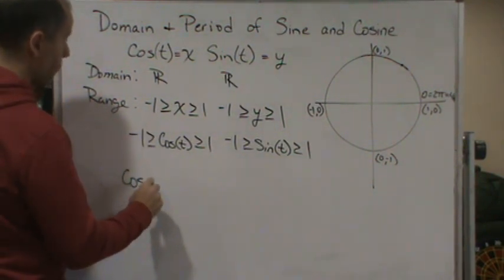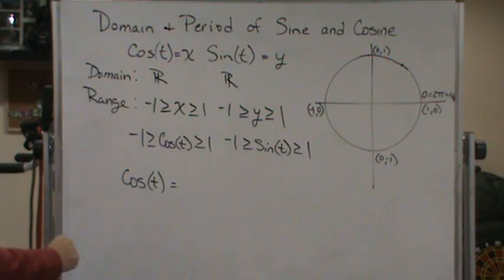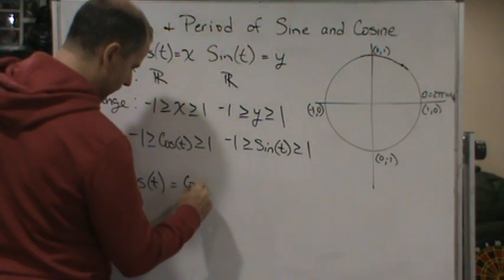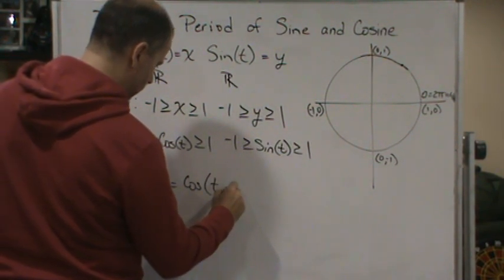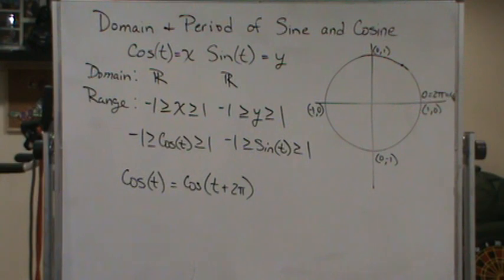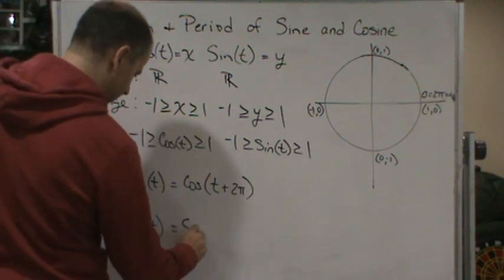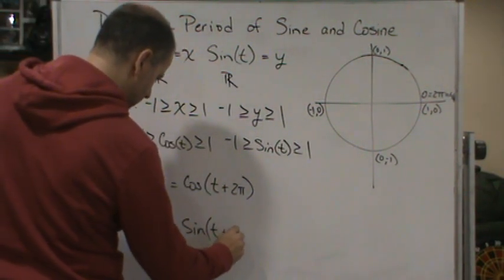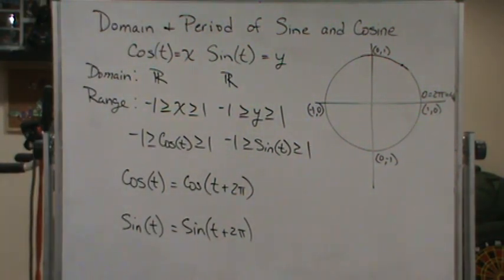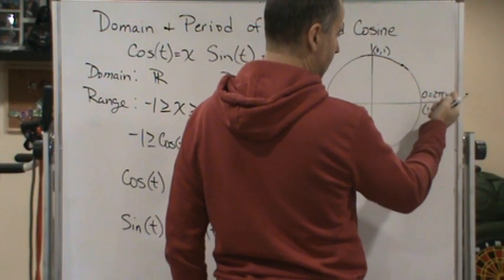So we can take cosine t will be equal to, from what we just discussed, this would be cosine t plus 2π. And then we have sine t is going to be equal to sine of t plus 2π, right? So all we're going to do is go one revolution, so that's going to bring us to the same point. So in other words, sine of zero is the same as sine of 2π, which is the same as sine of 4π.